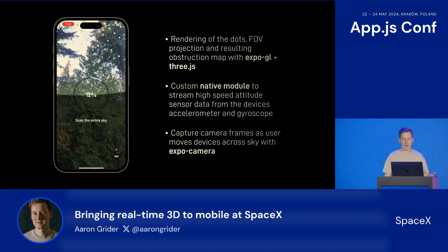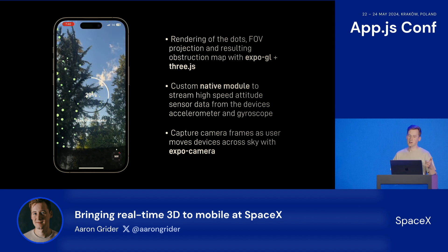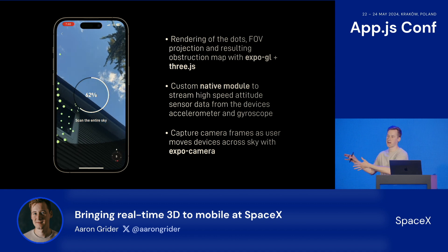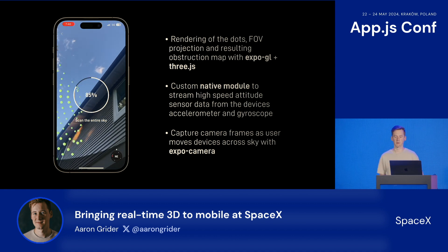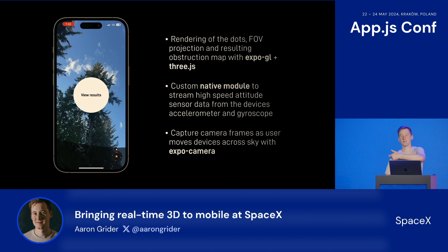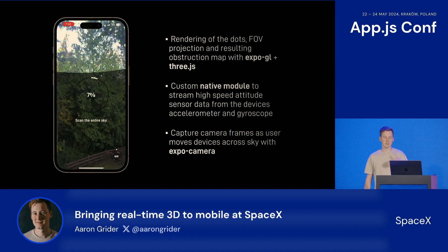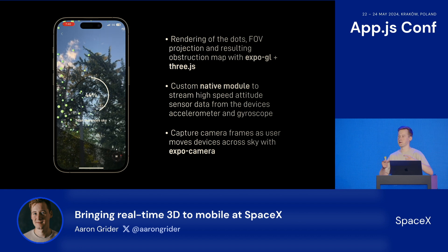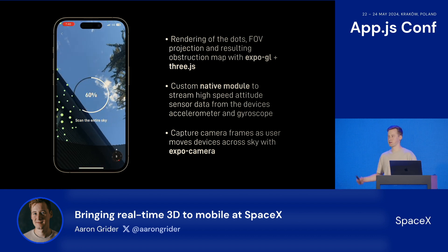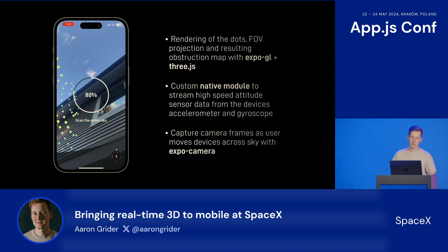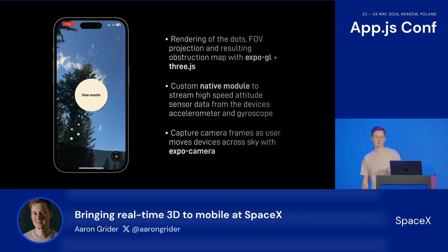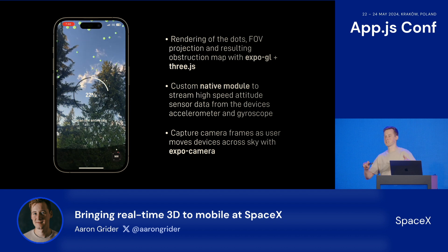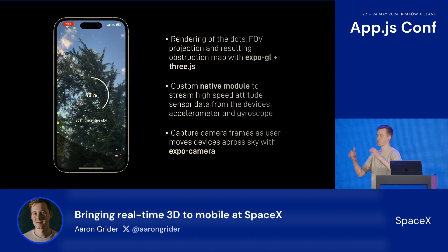When a user begins scanning the sky using their device's camera, we indicate progress using points projected in a 3D sphere. This is a Three.js 3D view being overlaid on the camera. Those points are evenly spaced and the user scans across and picks them up. We're using Expo GL and Three.js for real-time rendering of the dots, along with a field of view projection of what we would expect the hardware to see. We also use a custom native module to expose attitude sensor data from the device's accelerometer and gyroscope to determine relative device orientation and change the camera position in the 3D scene.